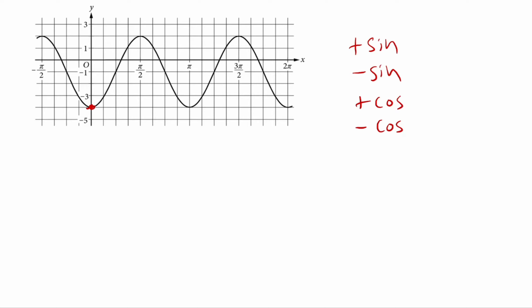To give an overview of it, the positive sine is one where at x equals zero, it starts at the middle and then goes up. So if it starts at the middle and then goes up like that, that's a positive sine.